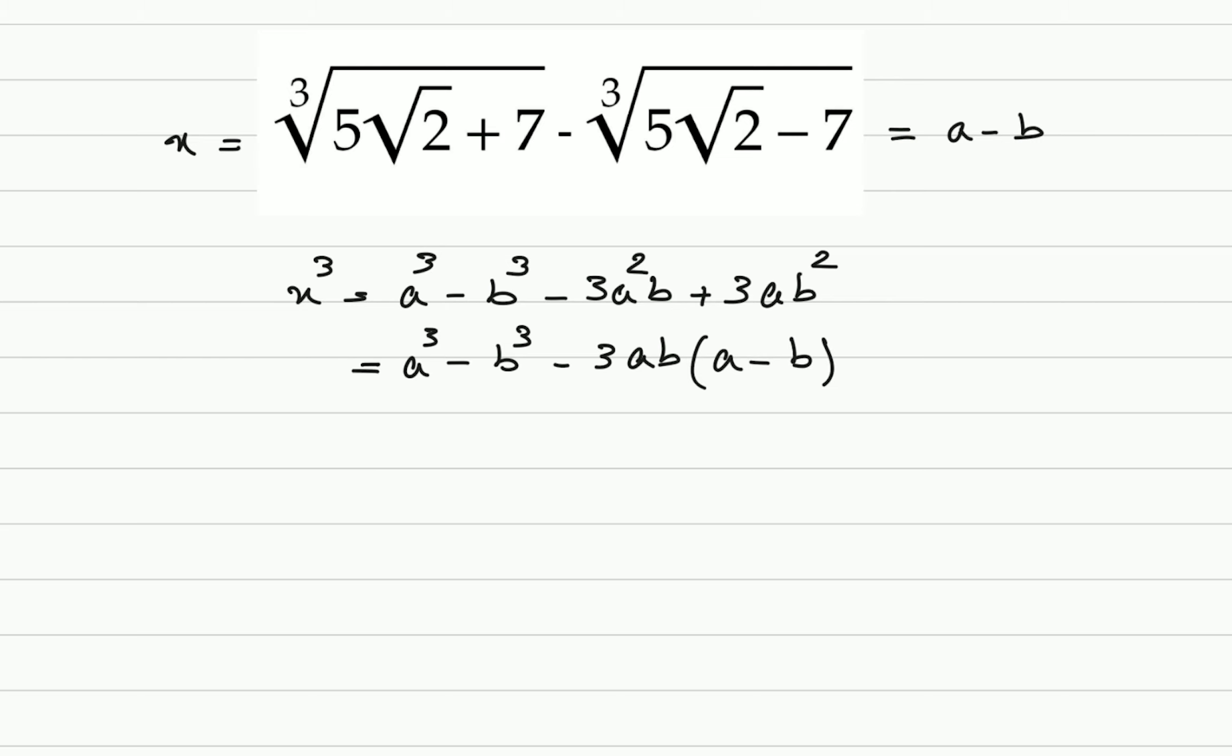Okay, so we have x cube equals first one to the power of 3, we can just get rid of the radical. Let's say, 5 times square root of 2 plus 7 minus b cube, that's 5 times square root of 2, that's a double negative becomes positive plus 7, minus 3 times a b multiplied by a minus b, and what was a minus b? That's x.